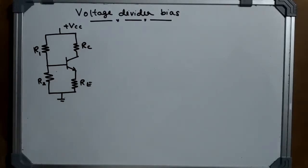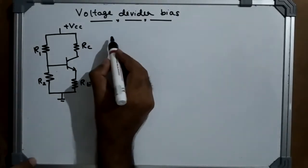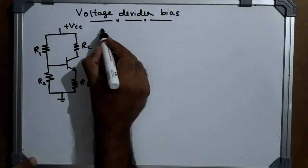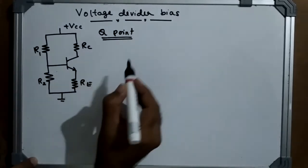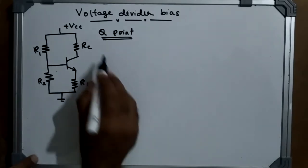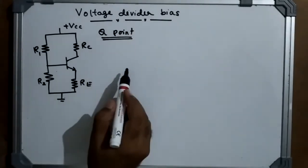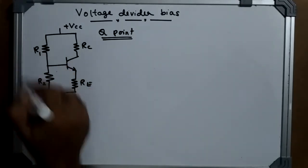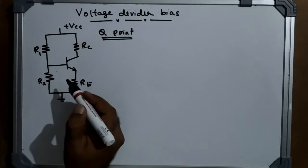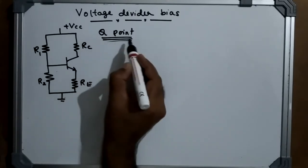Voltage divider bias is a way of biasing a transistor, and when you bias a transistor, the value of the Q point will be set. We'll analyze the voltage divider bias. First, we discuss the reason why this biasing is called voltage divider bias — because R1 and R2 along with VCC form a voltage divider.